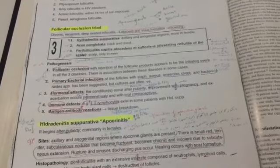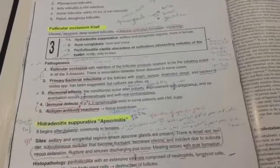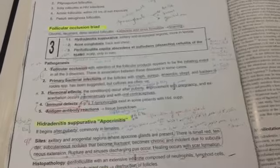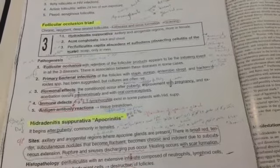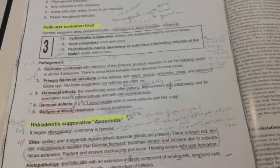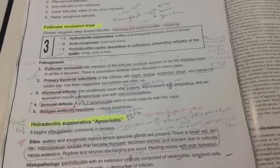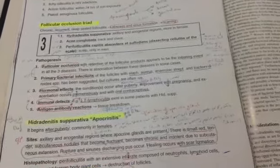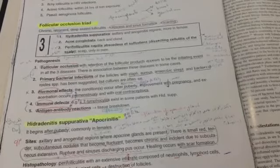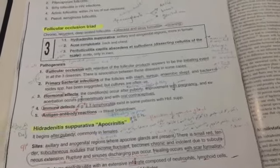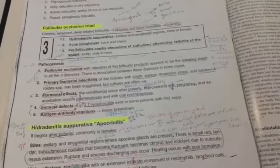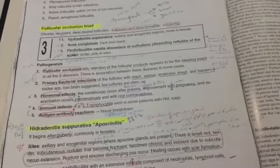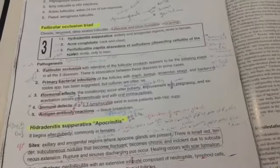The triad is formed of hidradenitis suppurativa, axillary and anogenital region, more in female; acne conglobata, back and chest; perifolliculitis capitis abscedens et suffodiens, or dissecting cellulitis of the scalp, scalp only in men. And actually, there is a tetrad also: pilonidal sinus. And this is the follicular occlusion triad formed by hidradenitis suppurativa, acne conglobata, and dissecting cellulitis of the scalp.